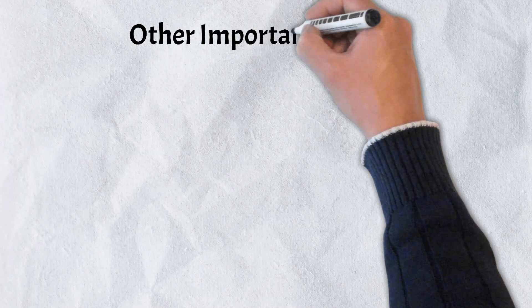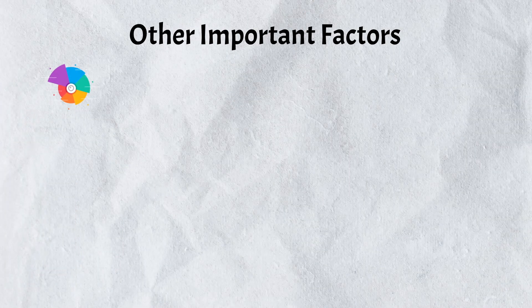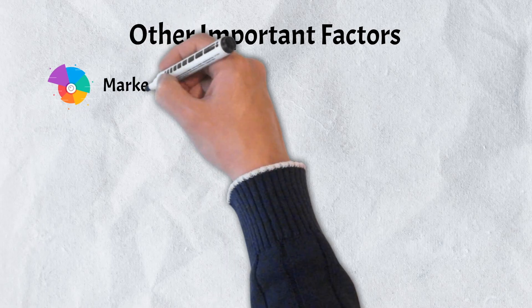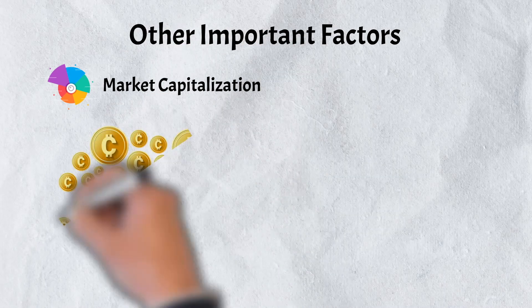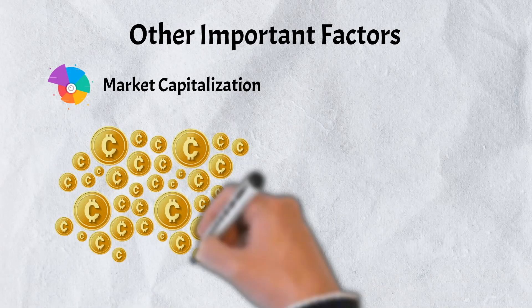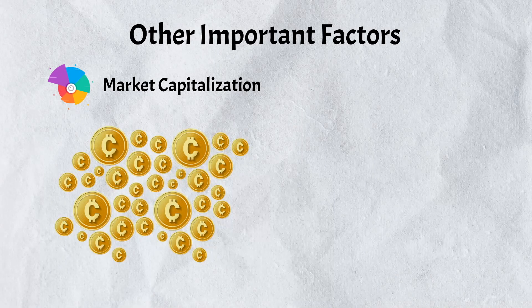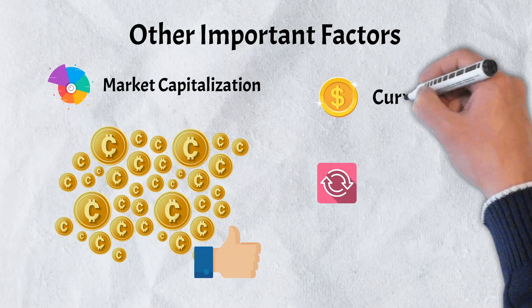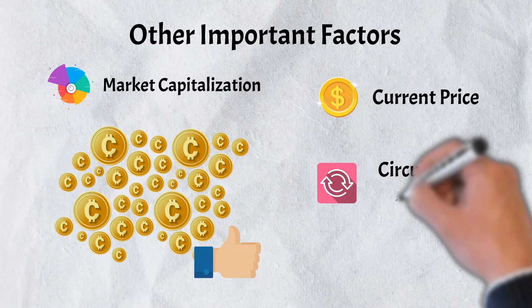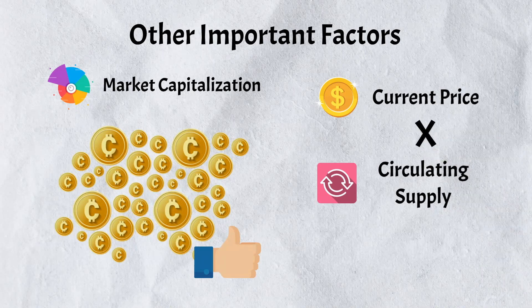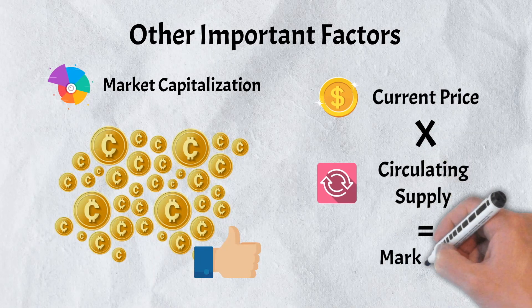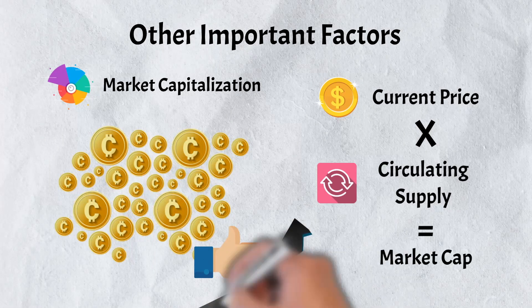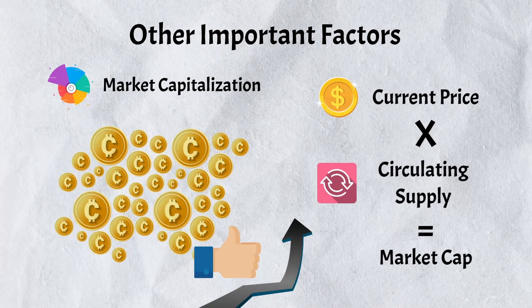There are several other important factors to consider as well. Here is a quick rundown on a few of them. Number 1: Market Capitalization. Market capitalization, or market cap, can be used as a key indicator of token value and to determine the popularity and size of a token. It can be calculated by multiplying the current market price of a token by its circulating supply. A token with a high market cap but low circulating supply has potential to increase in value over time.